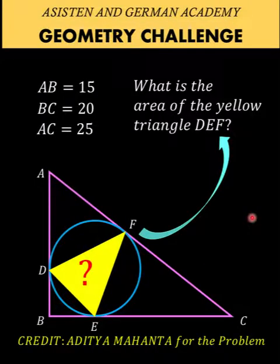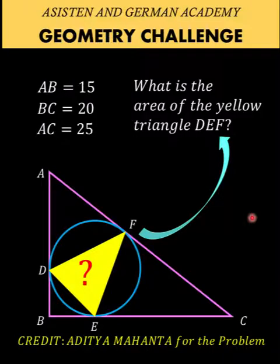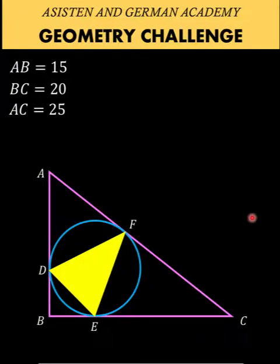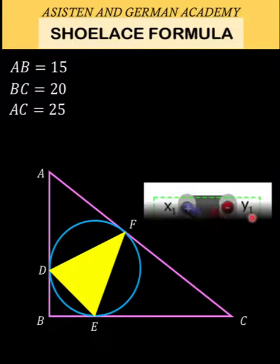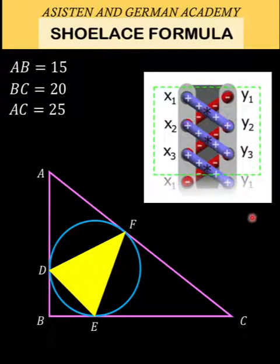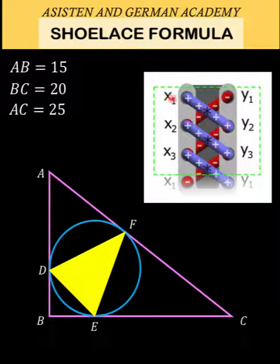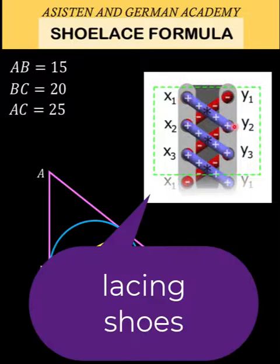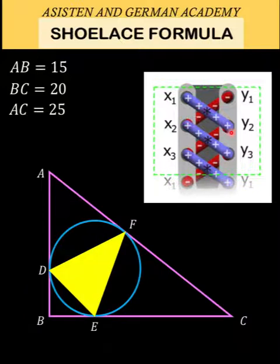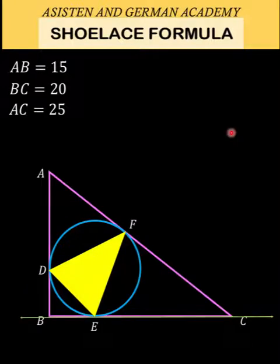Now let's solve this problem together. There are different ways of solving this, but in this video I'm going to use what we call the shoelace formula. The idea is we find the vertices of the triangle, and once found, we use the shoelace algorithm — which mimics threading your shoes — to evaluate the area.